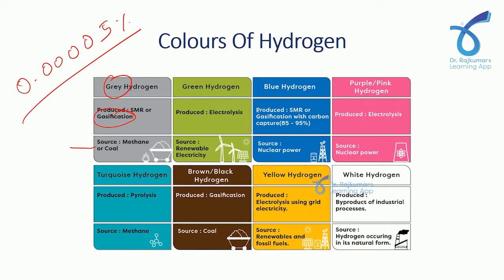Blue hydrogen is also produced with gasification but with carbon capture — 85 to 95% of carbon is captured. The source for blue hydrogen is nuclear power. For purple hydrogen, the source is also nuclear power, but the production method is electrolysis, whereas blue uses gasification. Turquoise hydrogen is based on pyrolysis and the source is methane.